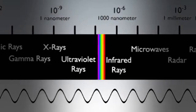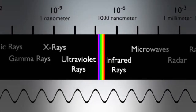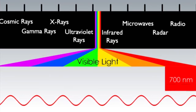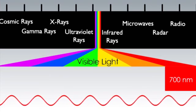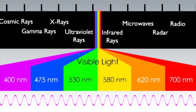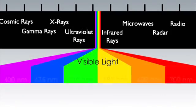Visible light occupies a narrow slice of the electromagnetic spectrum nestled between infrared and ultraviolet light. Red wavelengths have the lowest frequencies and longest wavelengths of visible light. As you move from red through orange, yellow, green, blue, and finally violet, wavelengths shorten and frequencies increase.